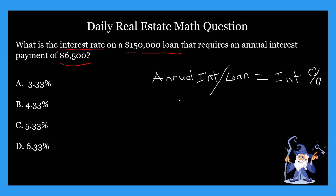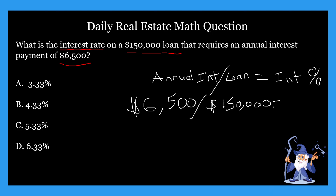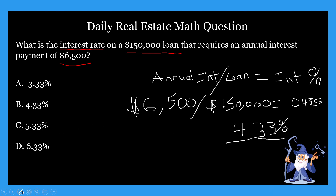Let's do the math. We have our formula: annual interest divided by the loan amount equals the interest percentage. We're going to take $6,500 and divide that by $150,000. If you plug that into your calculator, it's going to give you a long decimal — 0.433333, with about eight threes. We just round that, and it turns into 4.33%, which is our correct answer. Our correct answer on this one is B.